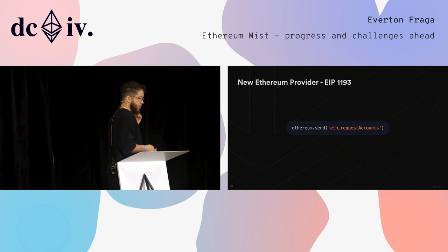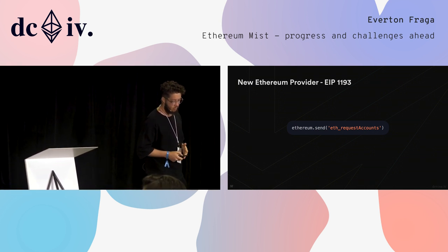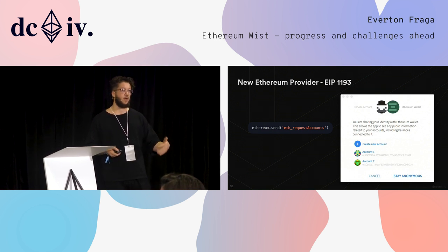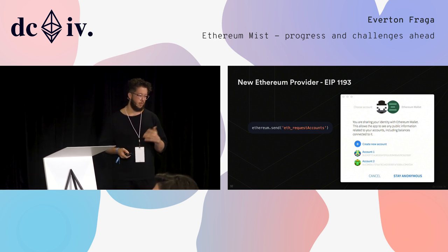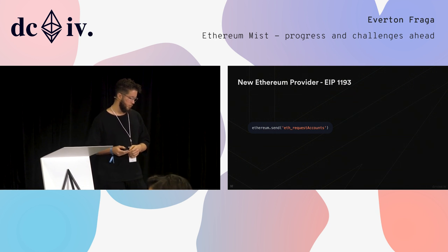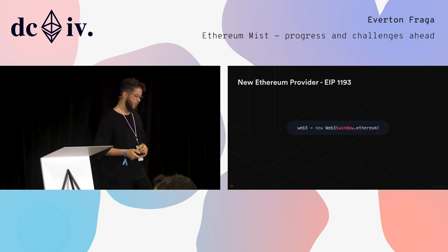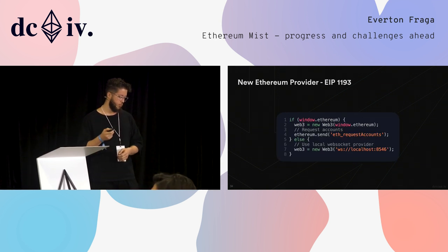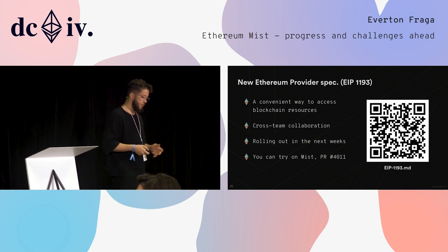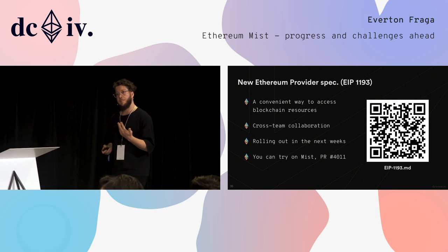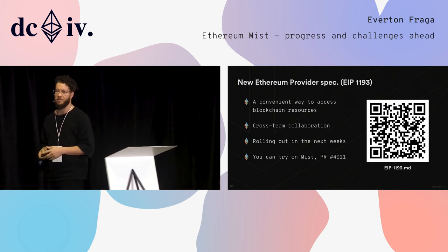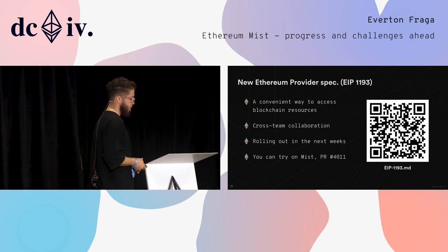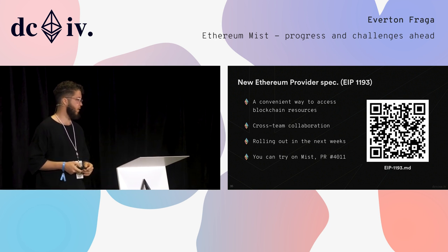With window.ethereum, we have the method that will request accounts. In Mist, a window will pop up where you can create a new account or select one or multiple accounts to provide to the website. To implement the change, you instantiate Web3 with this kind of connection — a pretty simple change and a convenient way to access blockchain resources. This is actually a collaboration effort; MetaMask and lots of other players are on this same boat. You can scan the QR code to see more in-depth documentation — we are about to roll out in the next weeks.